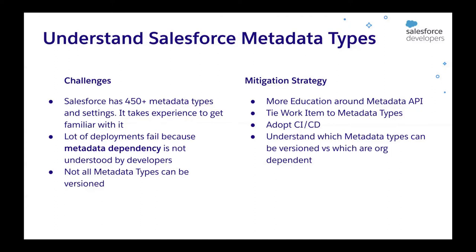Metadata dependency is a dependency chain or hierarchical graph that gets established between different metadata types. For example, if you create a custom object with fields and then use those fields in page layouts, profiles, Apex, or LWC, you create a chain of interdependency. What commonly happens is developers forget to include one dependency — like forgetting to add a referenced field when deploying an LWC component — and the deployment fails.